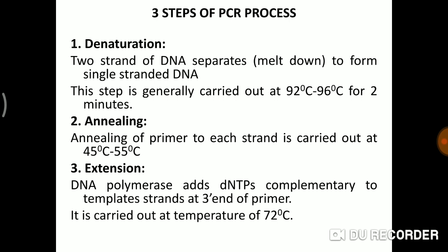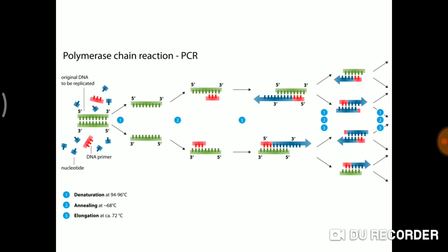Extension is carried out at a temperature of 72 degrees. These three steps complete what we call one PCR cycle. This is a diagram in which you can see step one, step two, and step three. In step one, you can see the double-stranded DNA and the separation of strands — the first step shown with an arrow.